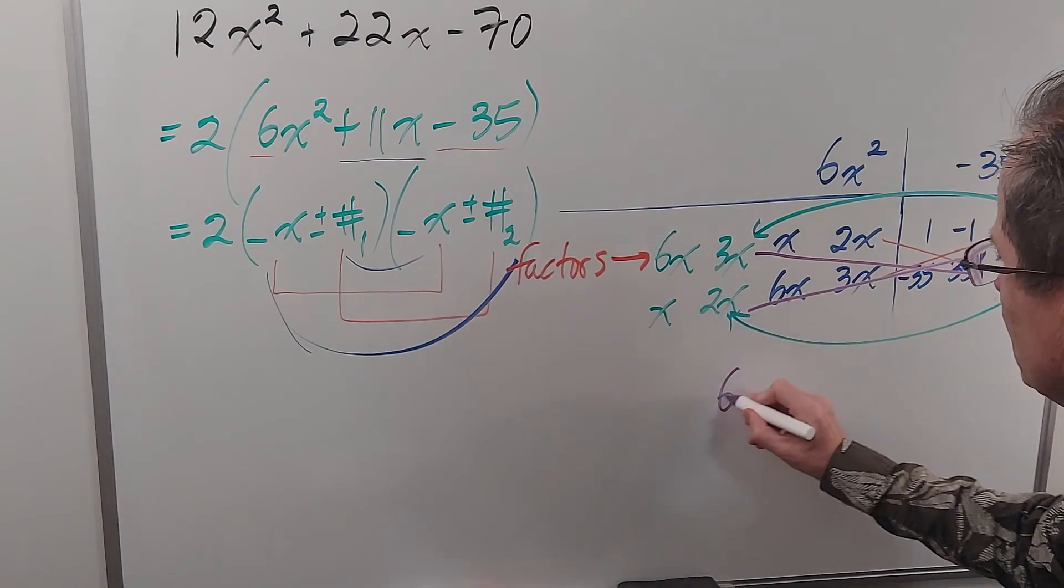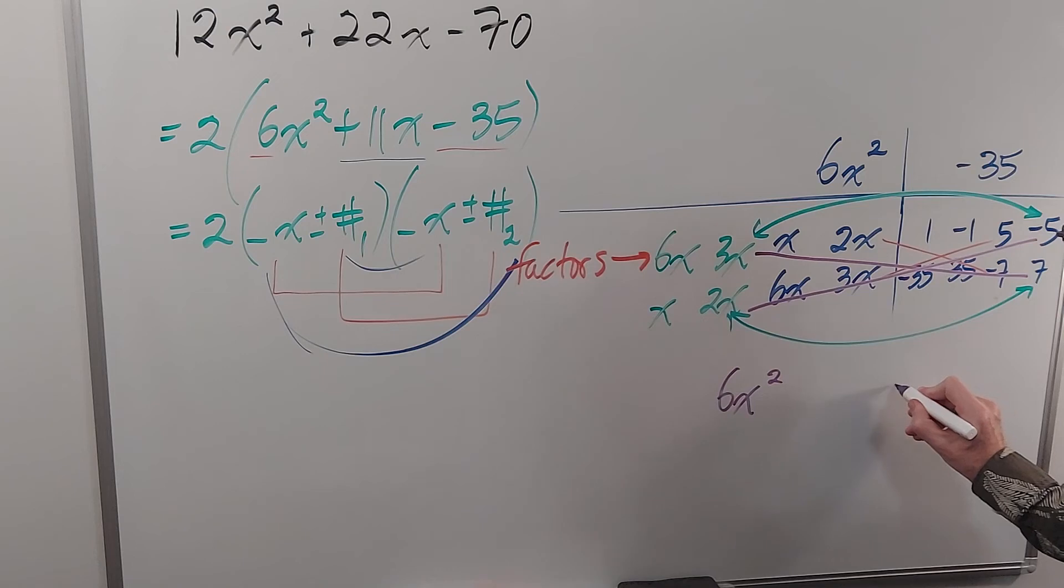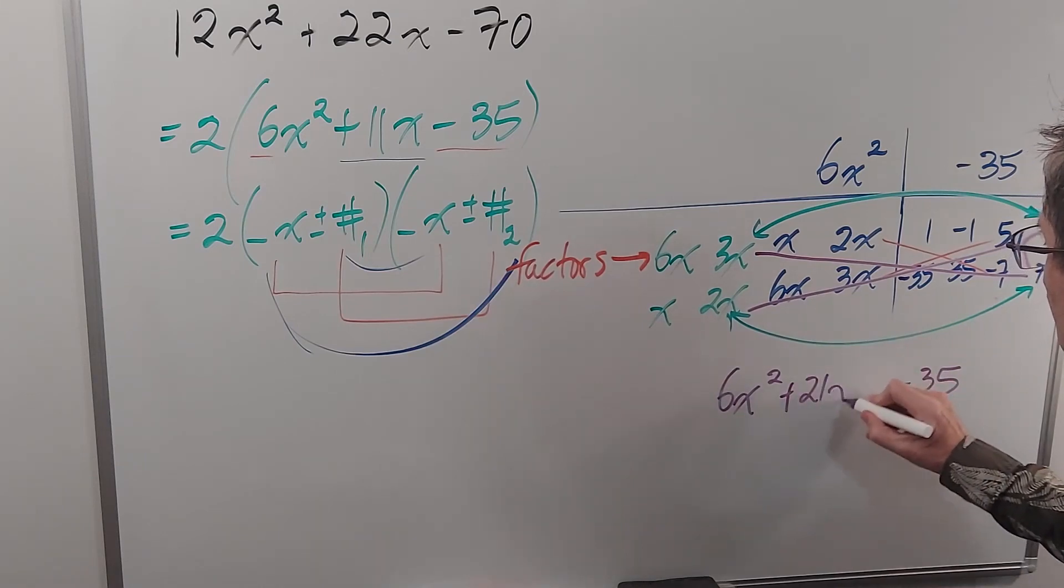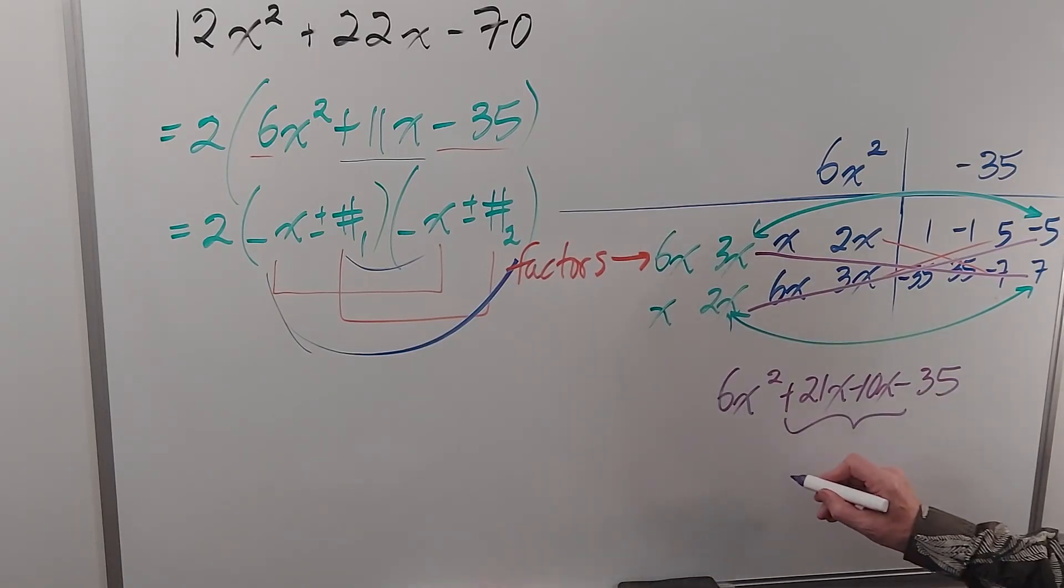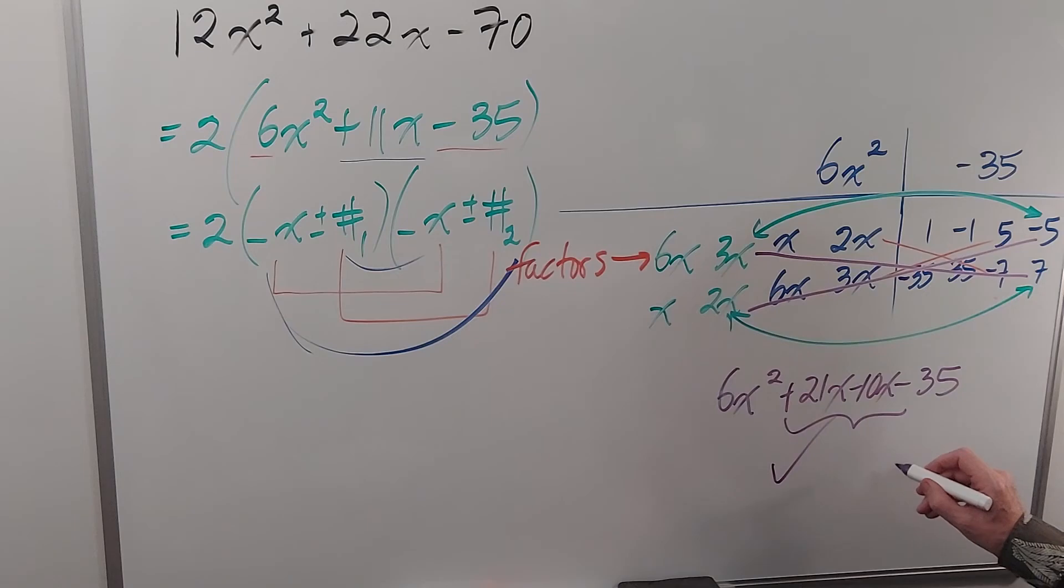So if I do that of course I'm going to get 6x². I'm going to get negative 35. I get 3x times 7 which is 21x. And I get 2x times negative 5 which is negative 10x. And sure enough that does add up to 11x so big fat check mark or better yet, smiley face.